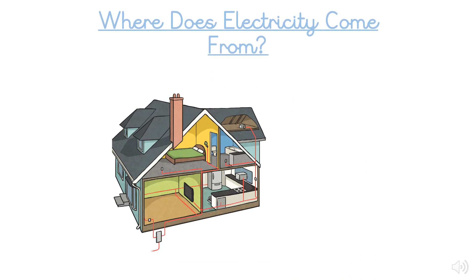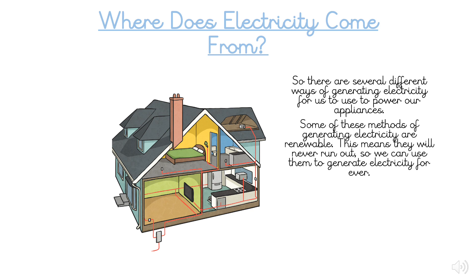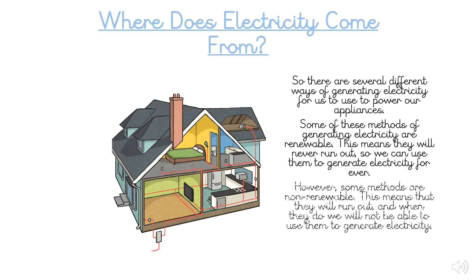So you now know that there are several different ways of generating electricity to power our appliances. Some of these methods are renewable, meaning they will never run out, so we can use them to generate electricity forever. However, some methods are non-renewable, which means that when they run out, we will not be able to use them to generate electricity anymore.